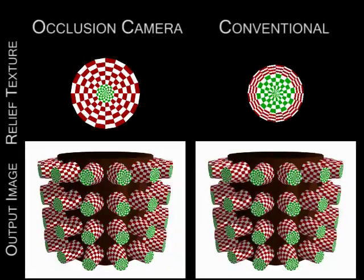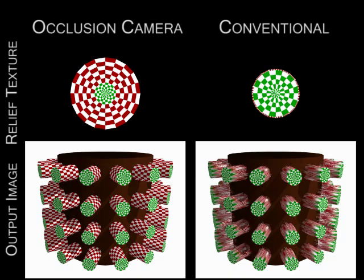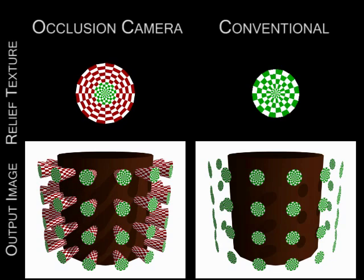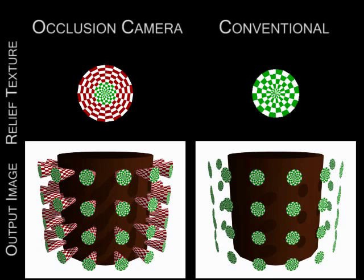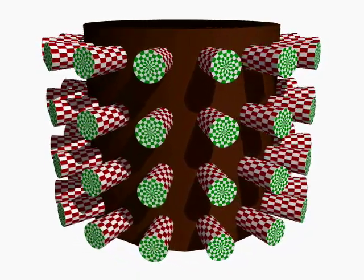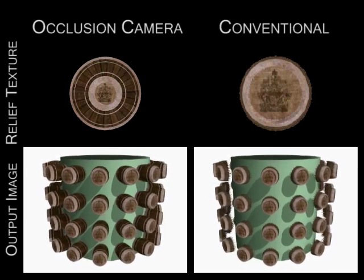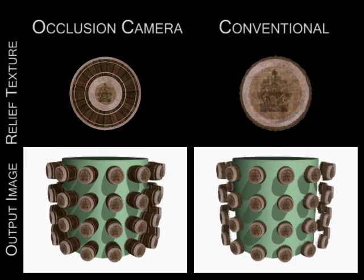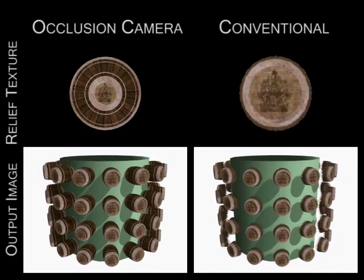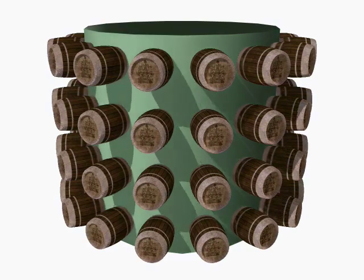We propose to use a single layer non-pinhole relief texture acquired with an occlusion camera that overcomes the limitation of orthographic sampling. In this example, an occlusion relief texture captures the sides of the barrel well. Like in the case of conventional relief texture mapping, the added surface relief correctly casts and receives shadows.